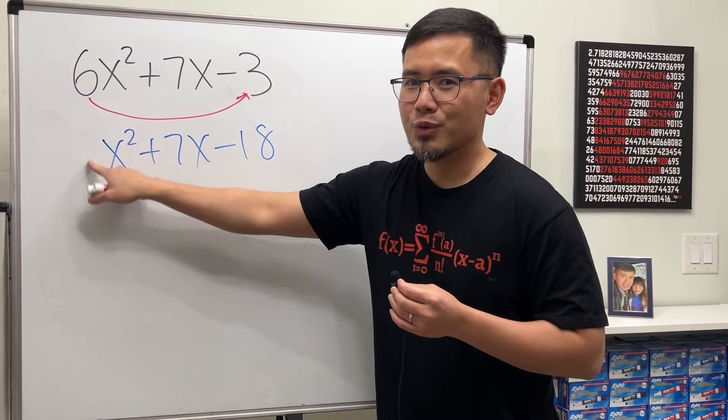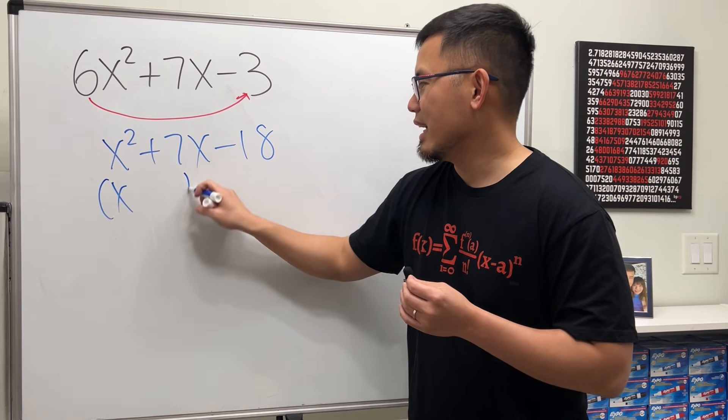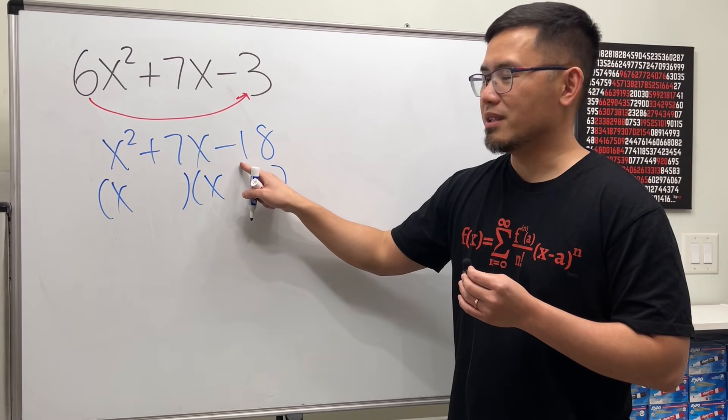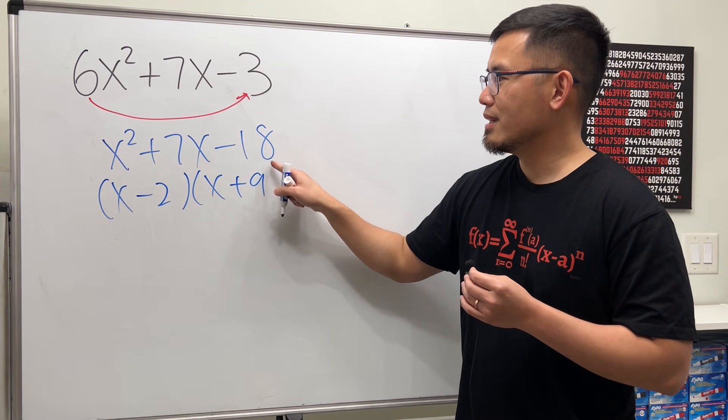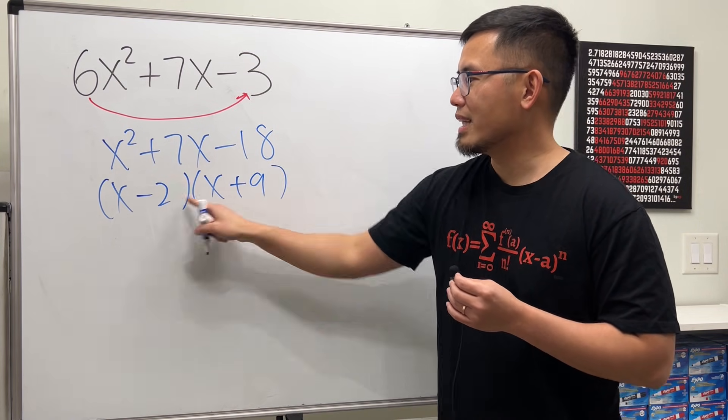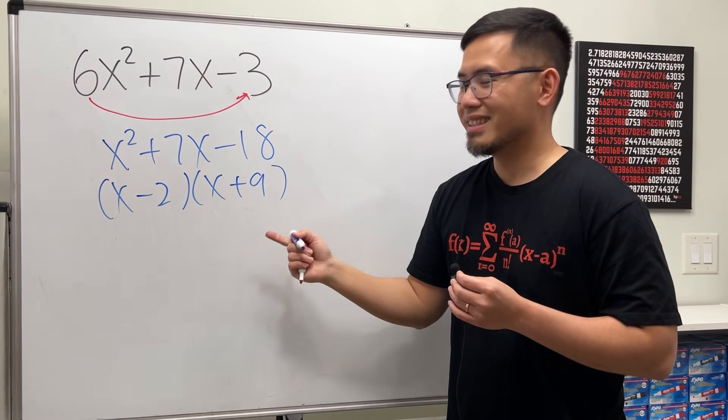So, it's just x and x. And, what do we need? We need minus 2 and positive 9 in order to get negative 18, and then, when we add it, we get 7. Now, what?